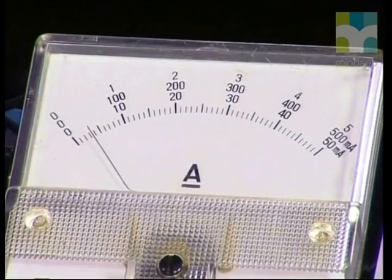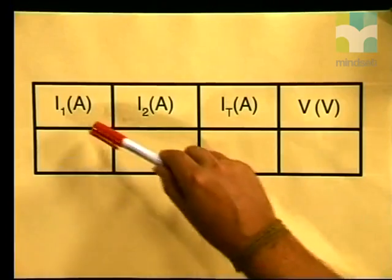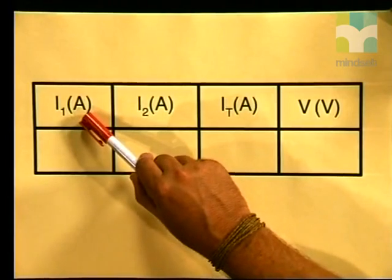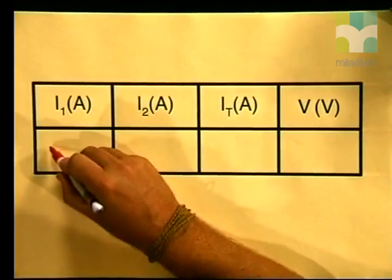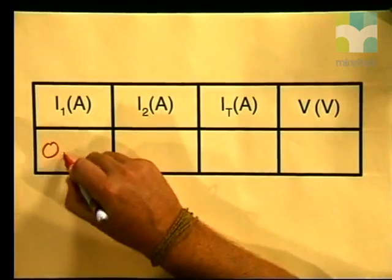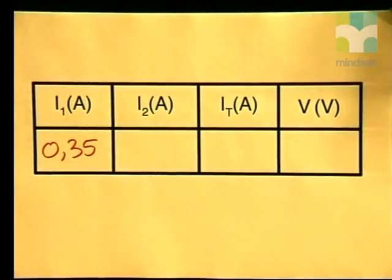Let's now take the reading for the current passing through R1. Using the top scale, we can see that the needle is lying on 0.35 amperes. Let's write that down on our table — R1 here represents the current passing through R1, and we write it down as 0.35 amperes.